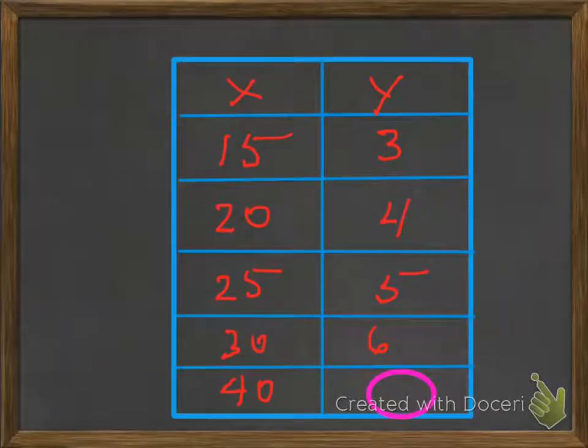All right. Did you come up with this chart? Let's take a look. So let's say X. X would be, for example, let's say you made 15 cookies. That means you could have three friends each get five cookies.